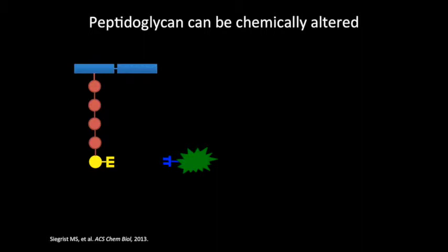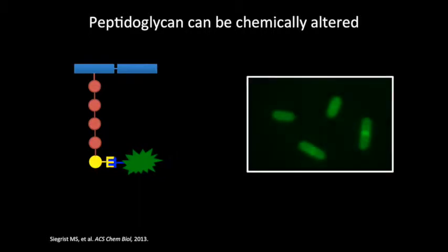This allowed molecules such as fluorophores, symbolized by the green star, to be covalently linked to newly synthesized peptidoglycan, and cells could subsequently be imaged for further analysis.